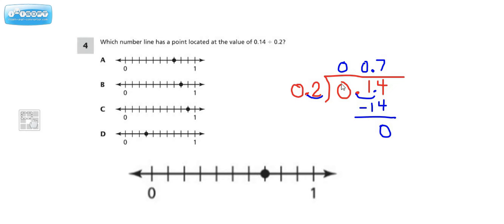Since 2 won't go into 0 at all, put a 0 here. 2 won't go into 1, put a 0 here. But 2 will go into 14 and it will go in 7 times. And if we multiply 2 times 7 we get the 14 with no remainder.